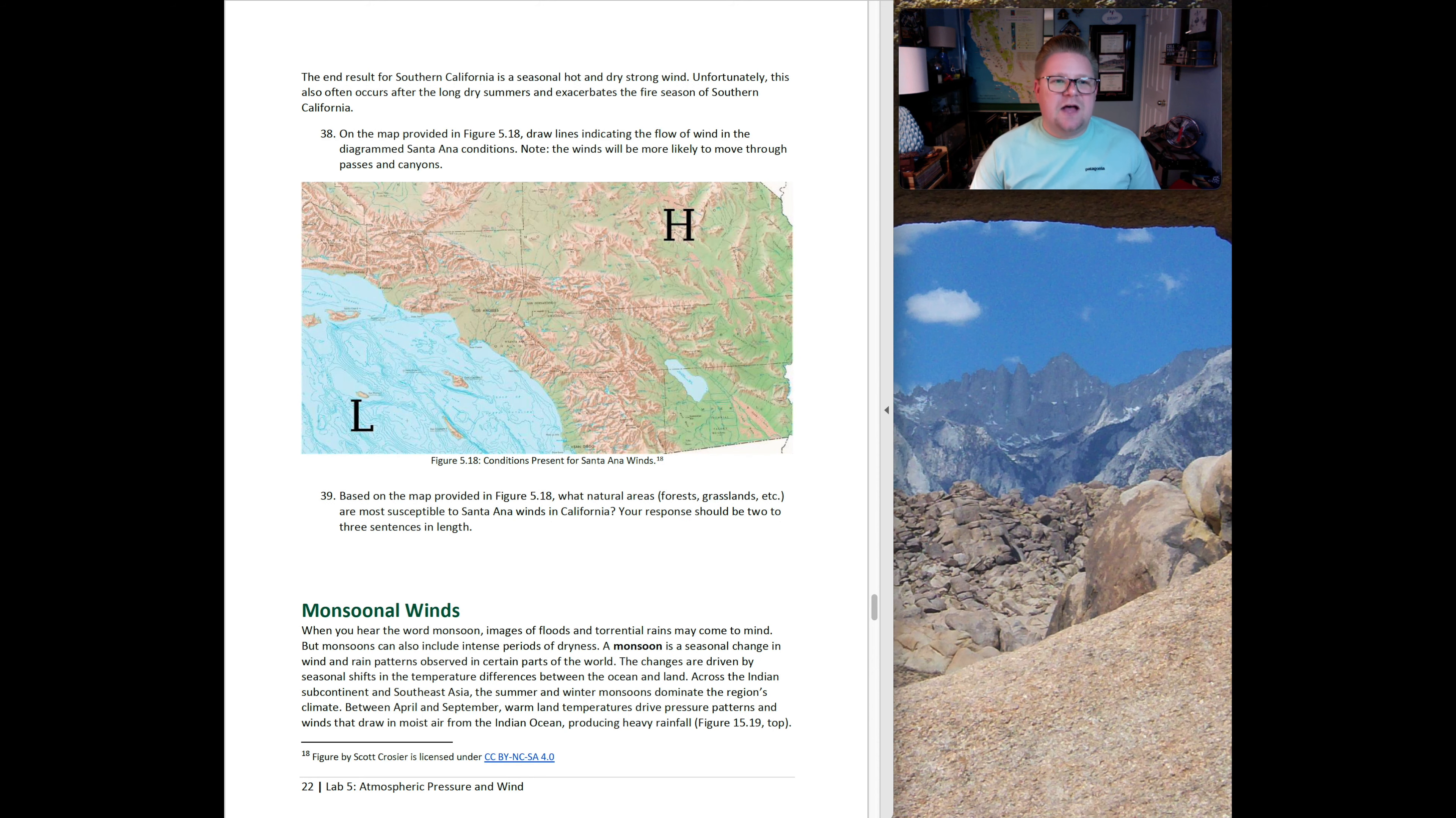For us in Southern California, Santa Ana winds are always associated with fire season. Dry, hot, fast air. The end result for Southern California is a seasonal hot and dry wind. Unfortunately this can occur after long, dry summers. On the map provided, figure 5.18, draw lines indicating the flow of wind in the diagram Santa Ana conditions. Note, the winds would be more likely to move through the passes and through the canyons. Question 39 asks, based on the map provided, what natural areas are more susceptible to Santa Ana winds in California? Take topography into consideration, because it's not always going to go over mountains. It's going to look for those valleys, arroyos and canyons to transfer that high to low pressure system.